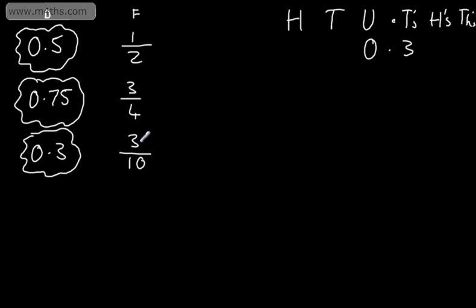So what we could do is simply write this as 3 tenths. This is in its simplest form, so we don't have to cancel down. 3 is a prime number, so we can't divide the numerator and the denominator by anything other than 1.